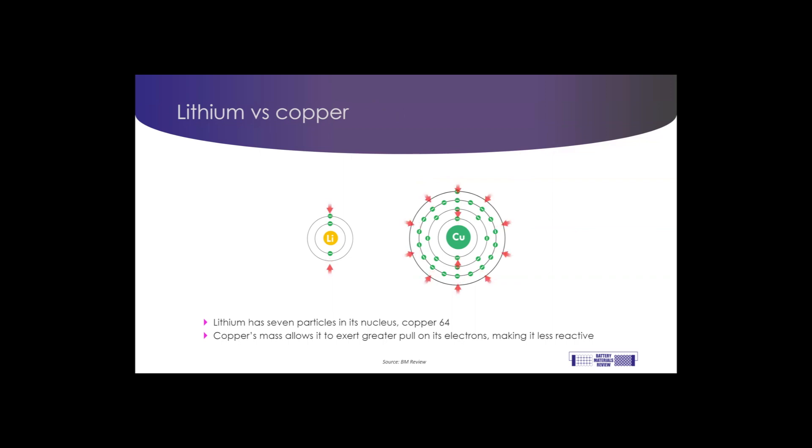for instance, which has 29 protons and 35 neutrons. And from that, you can probably understand that copper's mass is much larger, and as such, it exerts a greater pull on its orbiting electrons.